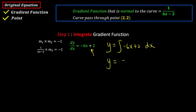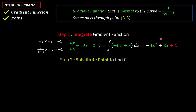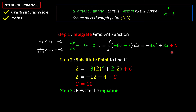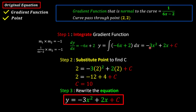Integrating gives y equals negative 6x squared over 2 plus 2x plus c, which simplifies to y equals negative 3x squared plus 2x plus c. Since it's indefinite, we still have c. Substituting the point (2, 2) into the equation, we find c equals 10. Rewriting the equation with c equals 10, we get the complete equation of the curve, and we are done.